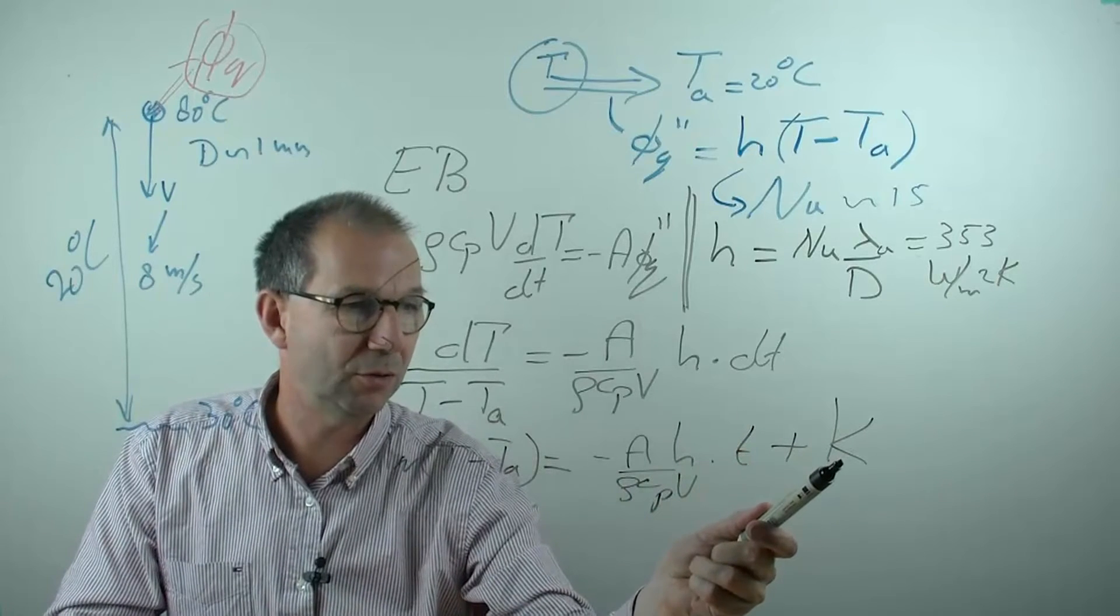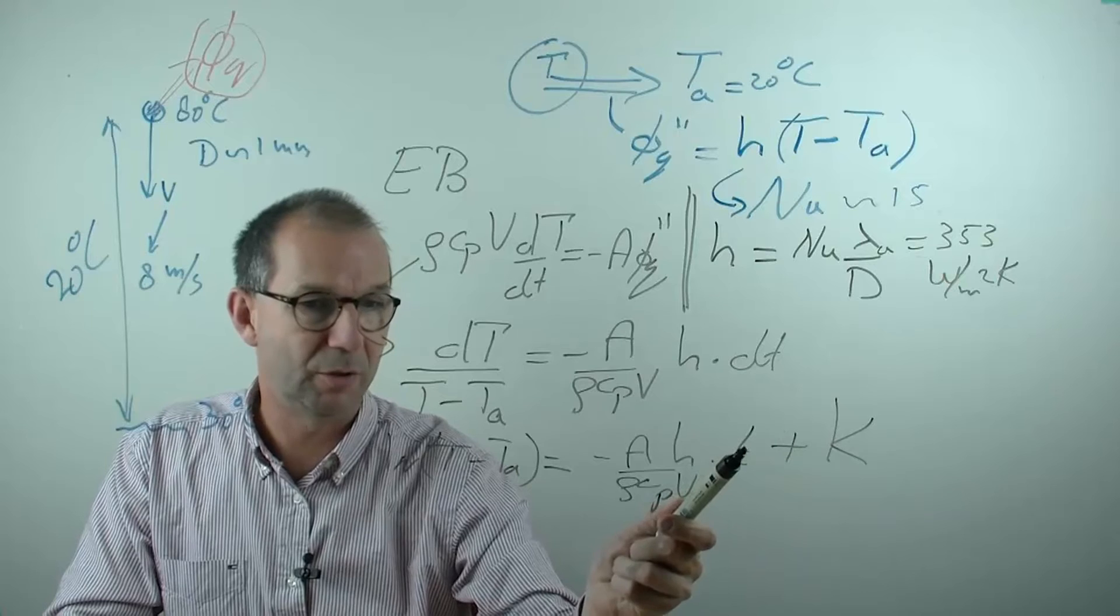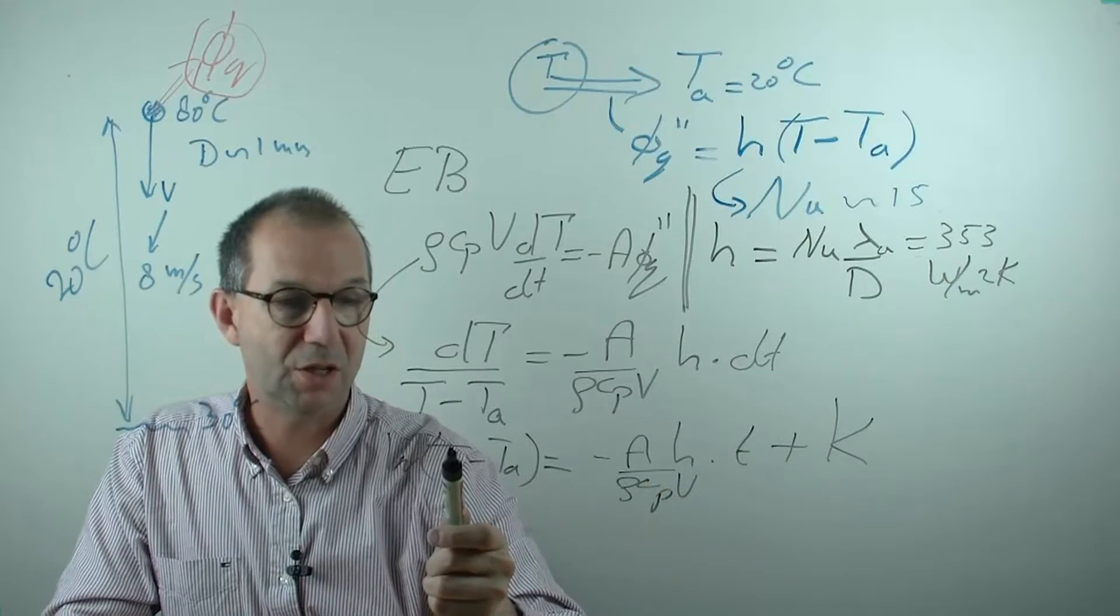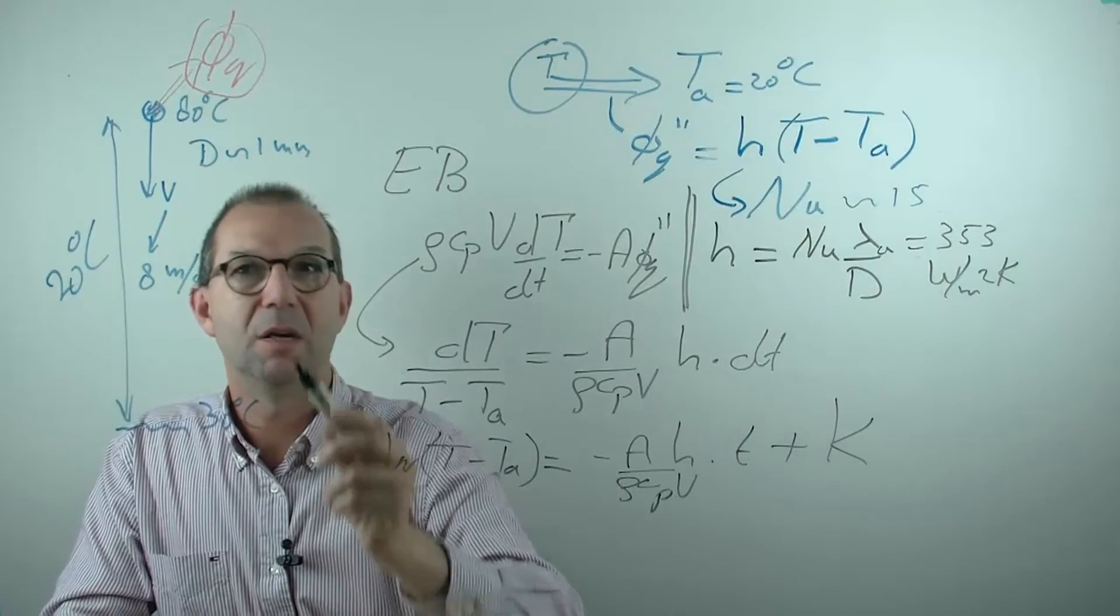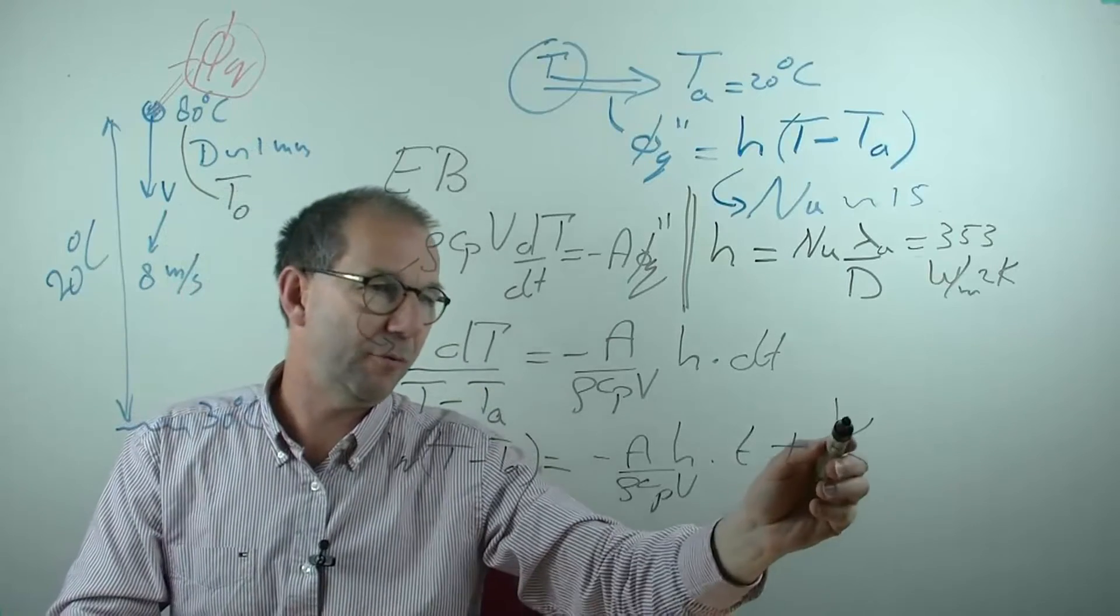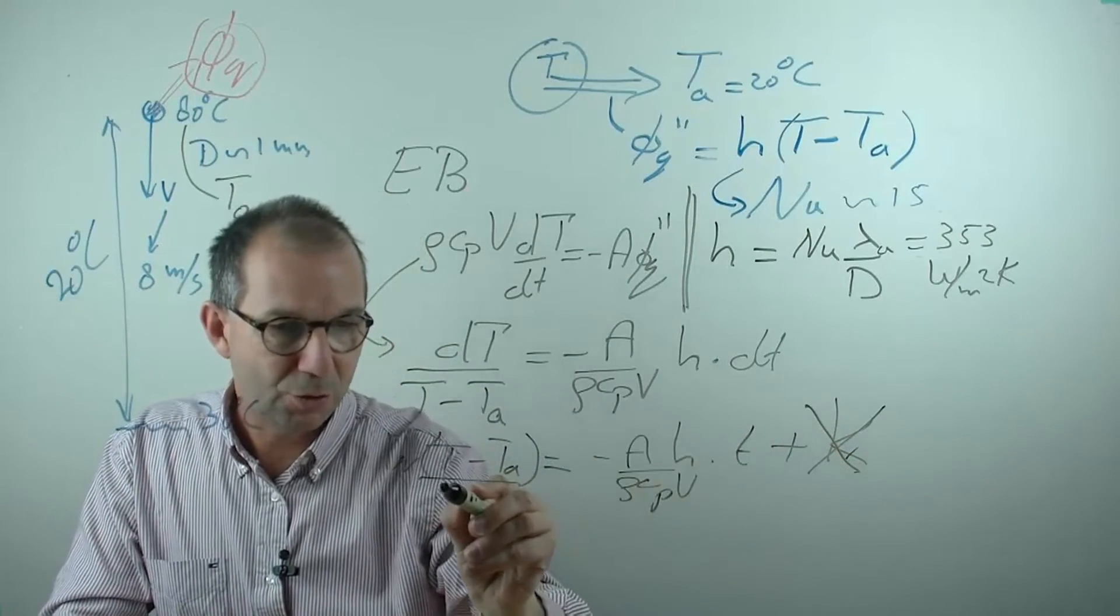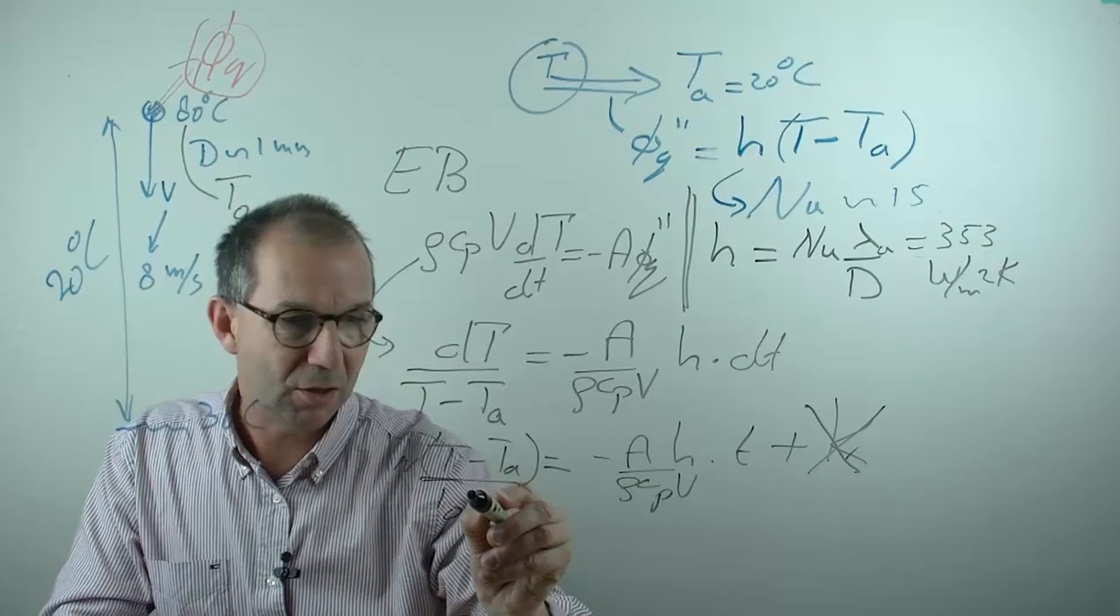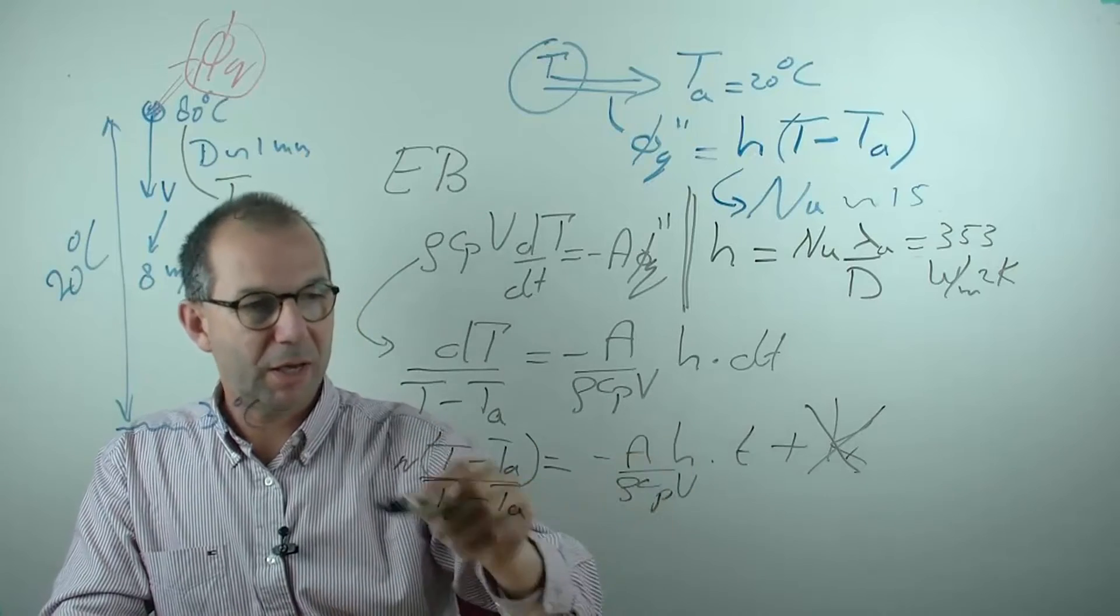Integration constant can be found by the initial condition that at time equals zero the particle is at its original temperature which we set here at 80 degrees. And I call this T0. So rather than writing this K, I can substitute and that turns out that you need to divide here by T0 minus TA. Now I get a closed expression.